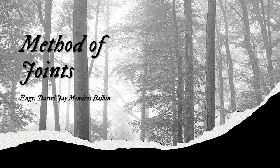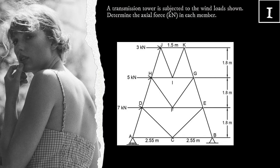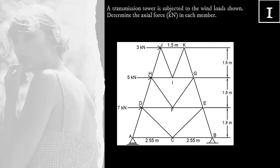Good day, students. I'm your guru, Daryl J. Mendros Balbin. In this video, I will use a method of joints to solve a sample problem. A transmission tower is subjected to the wind loads shown. Determine the actual force in kilonewtons in each member. If you are asked to determine the actual force in each member, the ideal solution is method of joints.